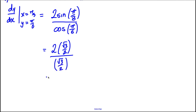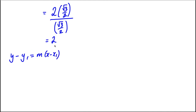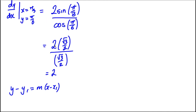So the answer for the gradient is simply 2. Then we're going to use y minus y₁ = m(x minus x₁). So we get y minus π/6 is equal to 2(x minus π/3).